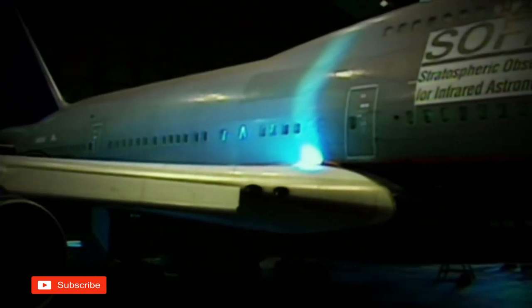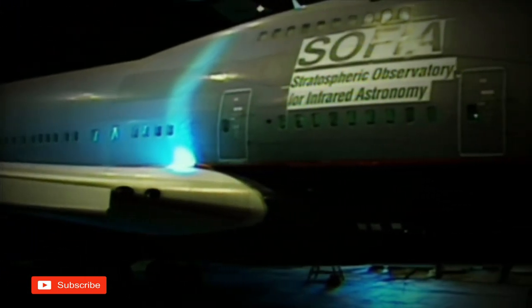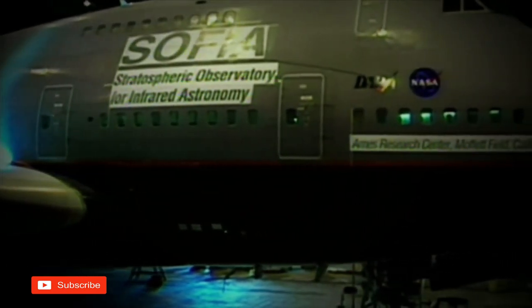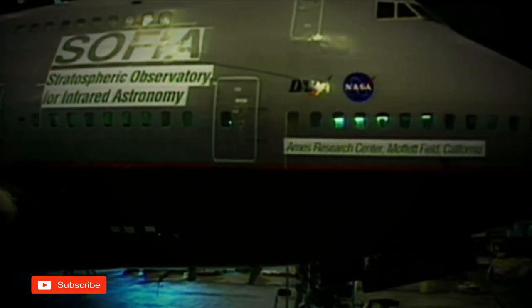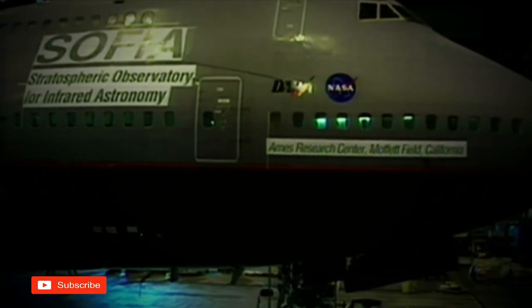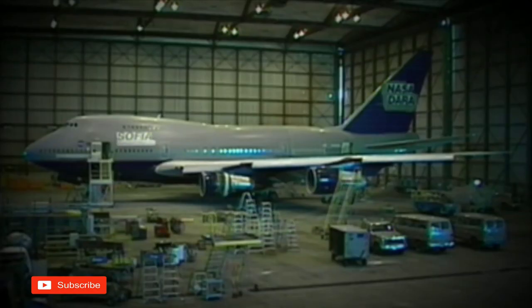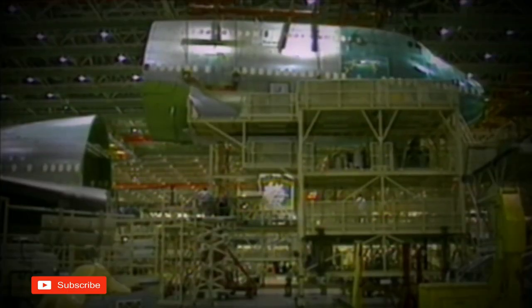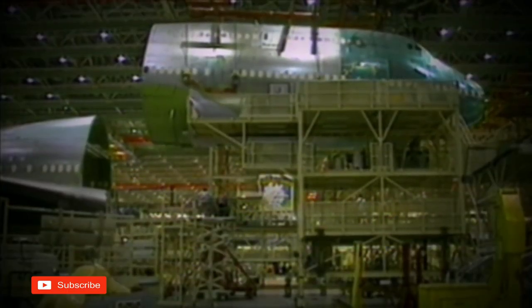Sofia is a Boeing 747 SP, a version of the famous Jumbojet, but 14 meters shorter. SP stands for Special Performance. The 747 SP is smaller and lighter than a normal Jumbo, but has the same engine performance. This enables the aircraft to fly extremely high, ideal for an infrared telescope.